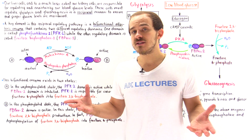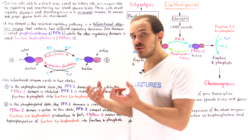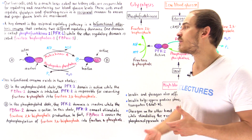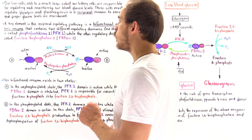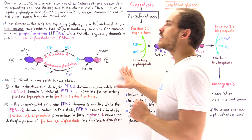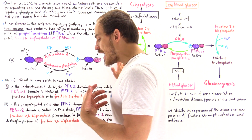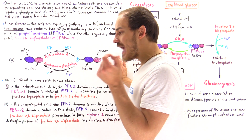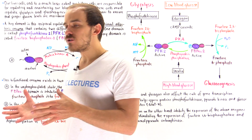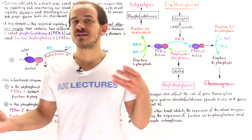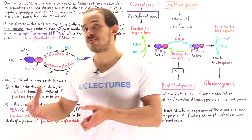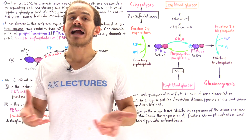Red blood cells depend entirely on the glucose found inside the blood plasma, as do brain cells and muscle cells. All these different types of cells get that glucose from the blood, uptake it, and then break it down in glycolysis to form ATP. That's why it's so important that our liver cells and kidney cells can properly regulate the levels of glucose in our blood.